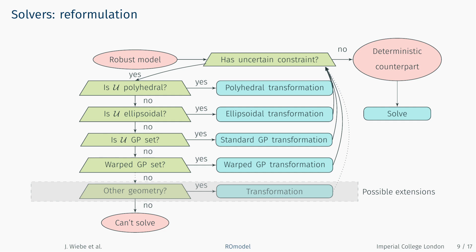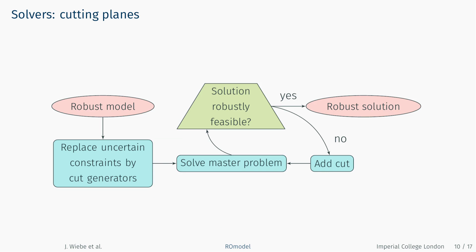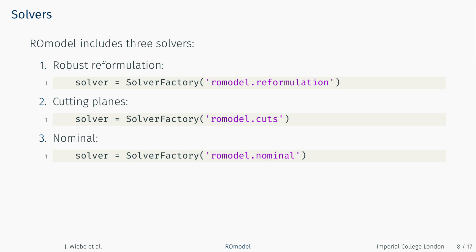The cutting plane-based solver first replaces each uncertain constraint with a cut generator object, then iteratively solves a master problem and separation problems to determine whether the solution is robustly feasible. If not, it adds a cut for every violated constraint, exiting once a robustly feasible solution is found for all constraints. The third solver, added for convenience, solves the nominal problem by replacing each uncertain parameter with its nominal value. This allows users to maintain one model implementation and solve both the robust and nominal problem.